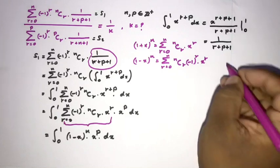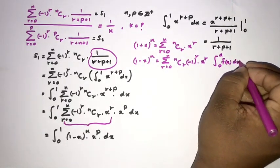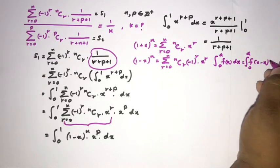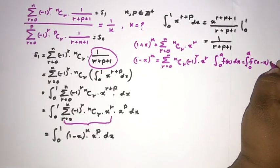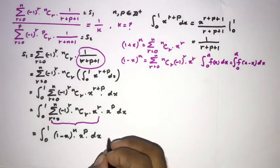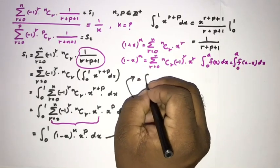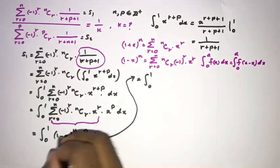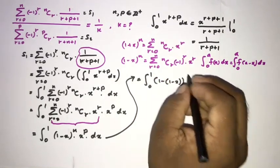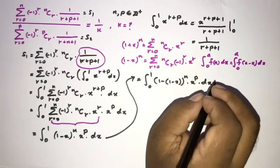Now we apply King's property. King's property states that the integral from 0 to a of f of x dx equals the integral from 0 to a of f of a minus x dx. Applying this with a equals 1, we replace x with 1 minus x, giving us the integral from 0 to 1 of 1 minus x to the n times 1 minus x to the p dx.